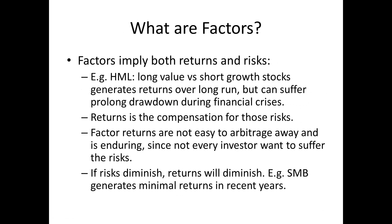Many people know that over the long term, value stocks outperform growth stocks — that's how Warren Buffett becomes rich. You buy value stocks and you short growth stocks. However, this strategy, which you might call the HML strategy, though it has a reasonable long-term return, has severe drawdowns, particularly during the financial crisis or the aftermath of a financial crisis. It also did very poorly during the financial bubble.